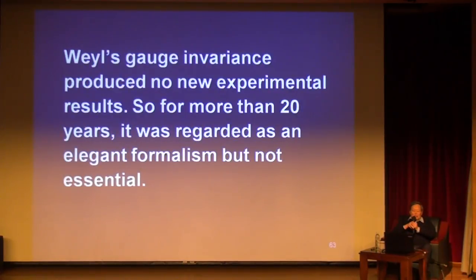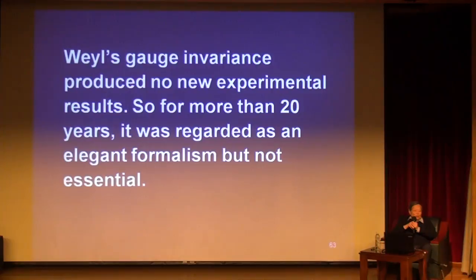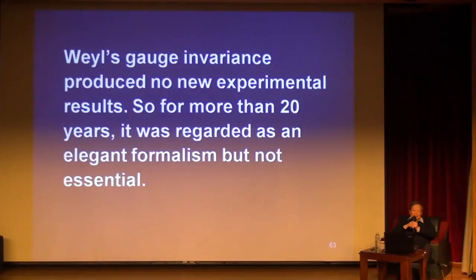Weyl's gauge invariance produced no new experimental result. It was very pretty, but it produced no experimental results, and so it was regarded as an elegant formalism but not essential. I remember when I was a graduate student and later a young postdoc — we all knew about the gauge transformation, and mathematically it's very elegant, but there was no use. The only practical use I remember was: when a colleague gives a lecture, at the end you would shoot the following question at him: 'Is your result gauge invariant?' If he had thought about it, he would give you a good answer; if he had not thought about it, it would floor him.